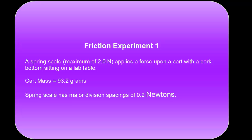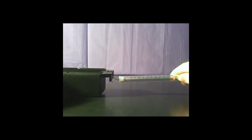Friction Experiment 1. A spring scale, maximum 2 newton force, will apply a force upon a cart with a cork bottom sitting on a lab table. The cart's mass is 93.2 grams. The spring scale has major divisions for every 0.2 newtons.